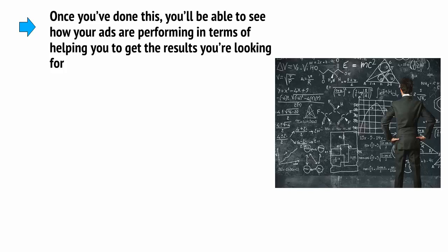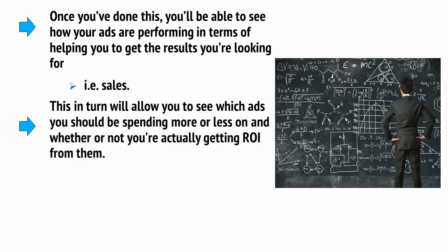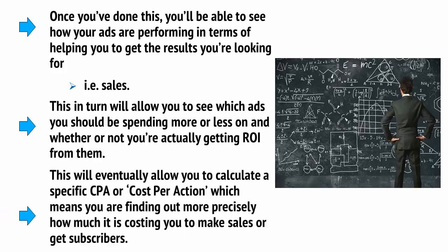Once you've done this, you'll be able to see how your ads are performing in terms of helping you get the results you're looking for — i.e., sales. This will allow you to see which ads you should be spending more or less on, and whether or not you're actually getting ROI from them. This will eventually allow you to calculate a specific CPA, or cost per action, meaning you'll find out more precisely how much it's costing you to make sales or get subscribers. You'll also be able to do a lot more tracking for your ads, and looking around the dashboard will help you find all kinds of useful options.